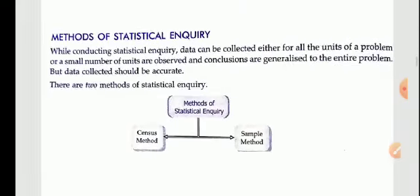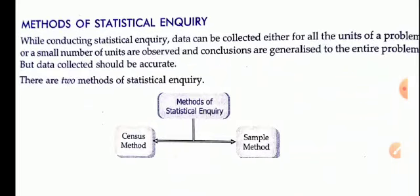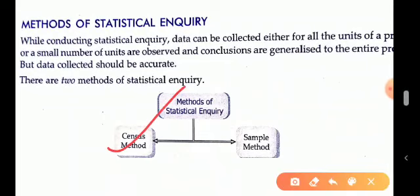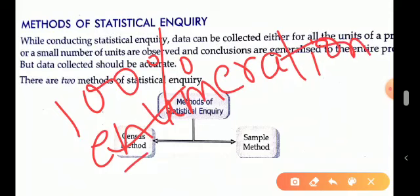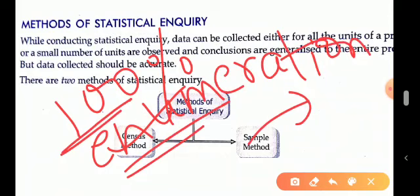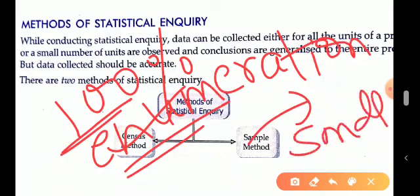The subject matter of the inquiry leads us to the methods of inquiry. You have two methods: census and sample. In the census method, you do 100% enumeration — you study the population completely, every member. In the sample method, you choose only a small part from the population and study that.